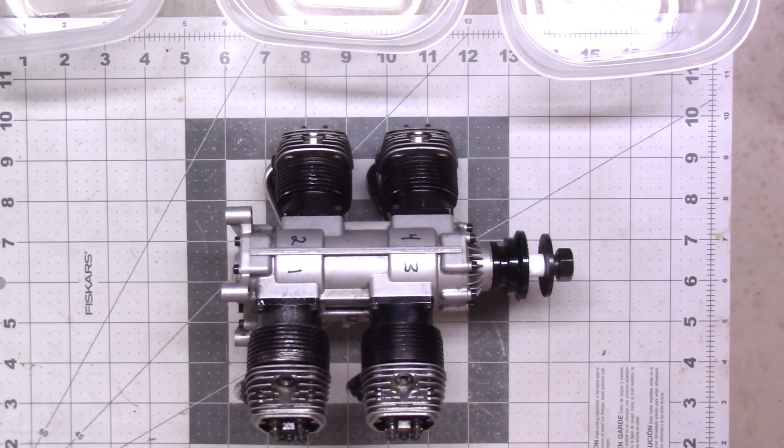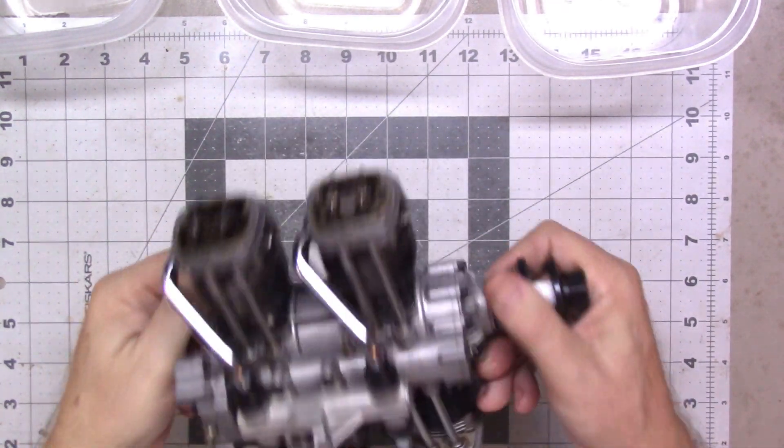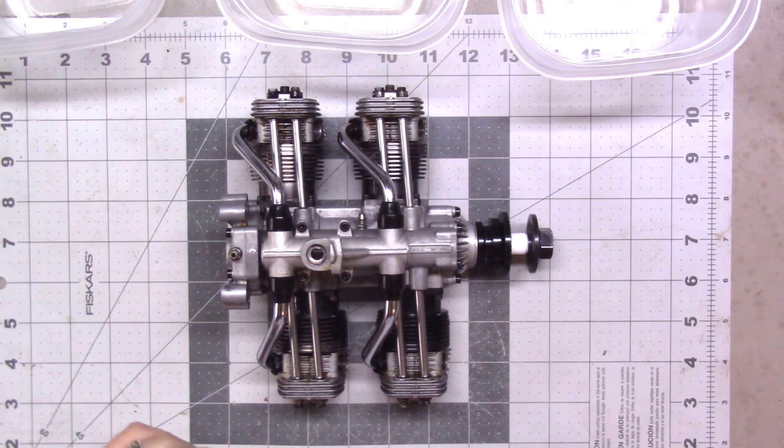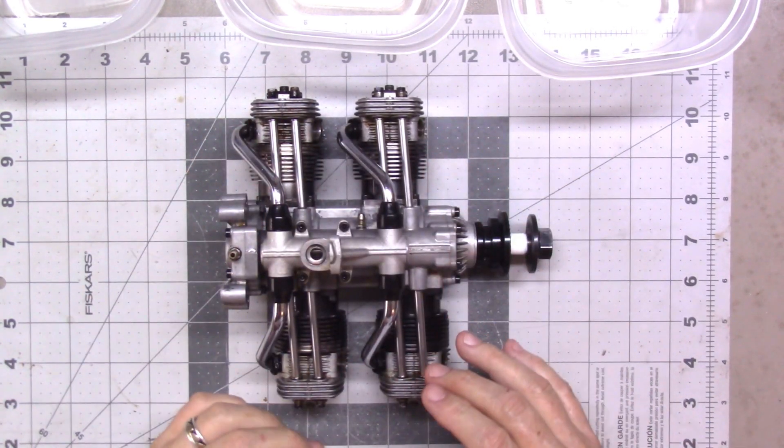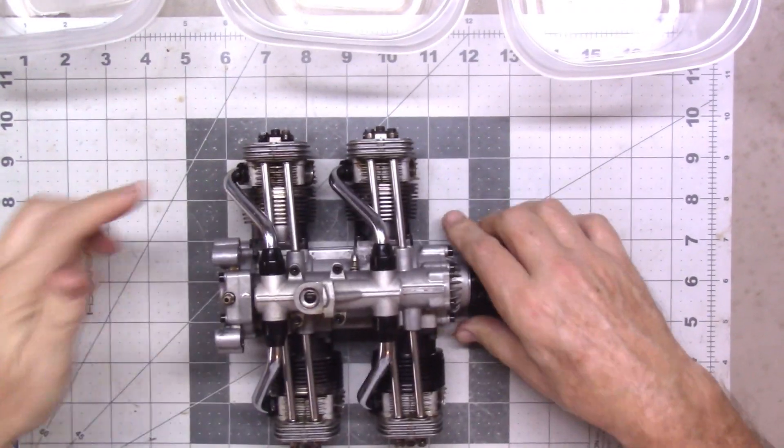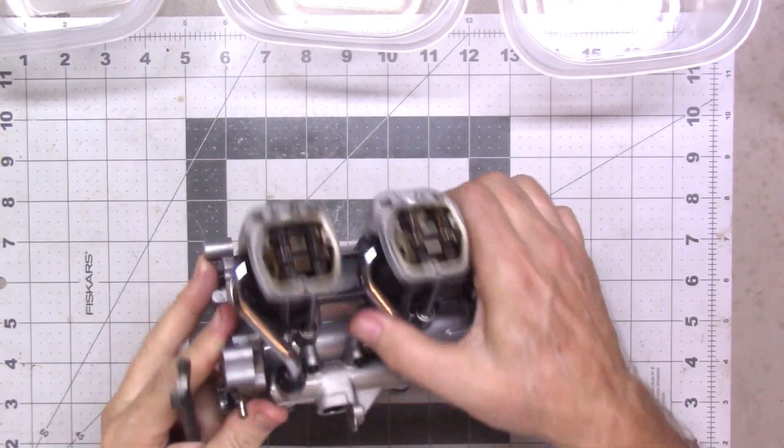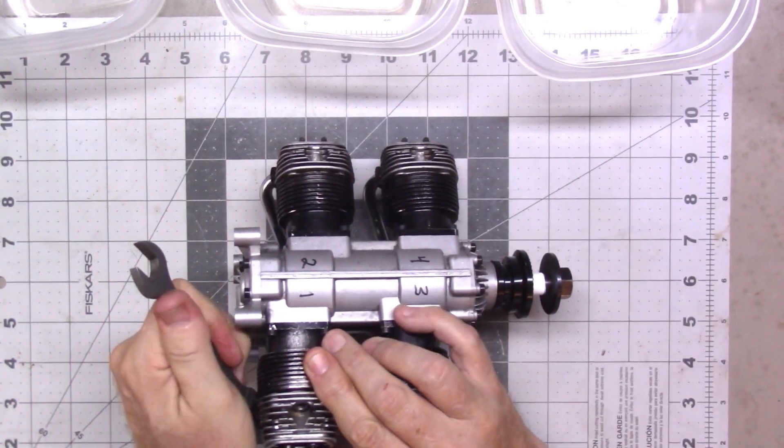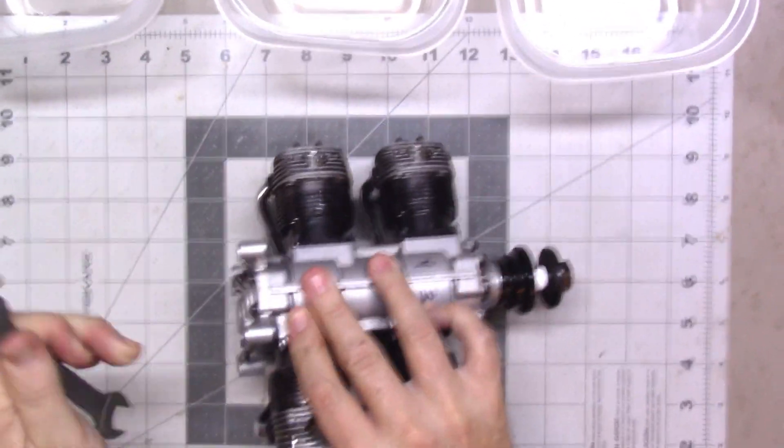Let me zoom in here and I've already removed the carb. So I think the next order of business here is get the intake manifolds off. So let's see here, this is number one. So I'm going to just start by loosening up these intake screws.